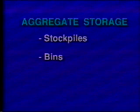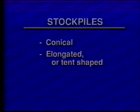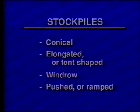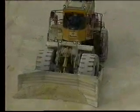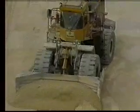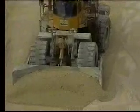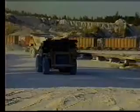Aggregates are stored in stockpiles, bins, and silos. Stockpiles are described as conical when formed with a fixed or adjustable height conveyor; elongated or tent-shaped when formed with a radial or mass stacker; windrow when dumped from trucks or placed by a clamshell; and pushed or ramped when pushed into place with a loader or dozer. Both single-layer truck or clamshell form stockpiles offer good product control. Succeeding loads can be dumped against previous loads to confine and blend the material.